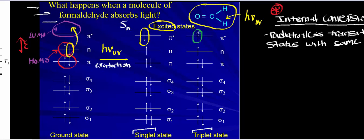The triplet state — notice that this electron that got excited is opposite in spin quantum number to the way it started in the ground state. You typically denote the triplet state with a T and then some number. So the electron in the singlet state and the one in the triplet state have different spin quantum numbers.